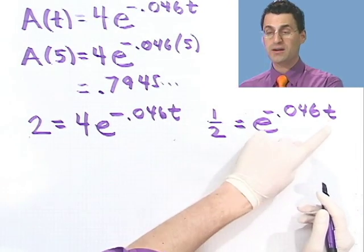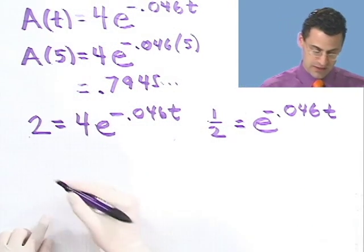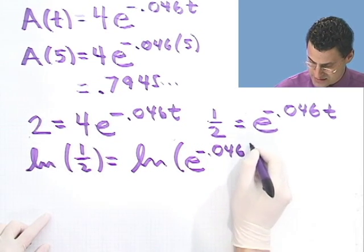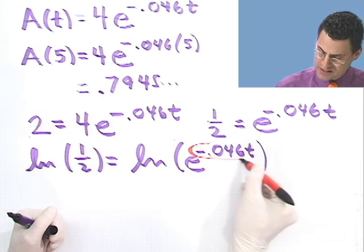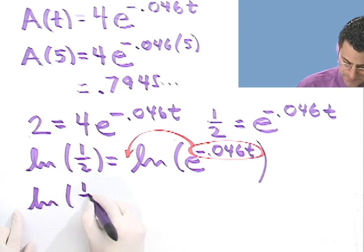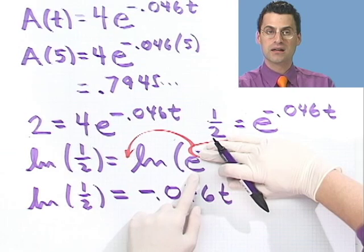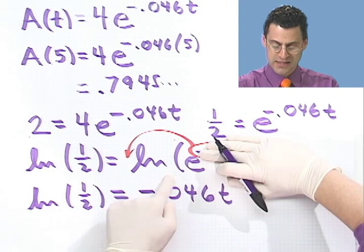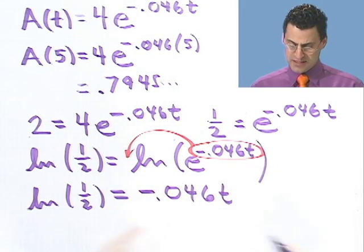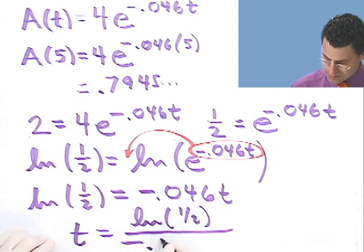How do you solve an exponential equation? If you have the variable up in the exponent, you want it on the ground floor. So I'll take the natural log of everything and use the property of exponents and logs — the exponent can be pulled out as a coefficient. Taking natural log of both sides: natural log of one half equals negative 0.046t times the natural log of e. But the natural log of e is just 1, so I'm left with natural log of one half equals negative 0.046t. Solving for t: t equals the natural log of one half divided by minus 0.046.